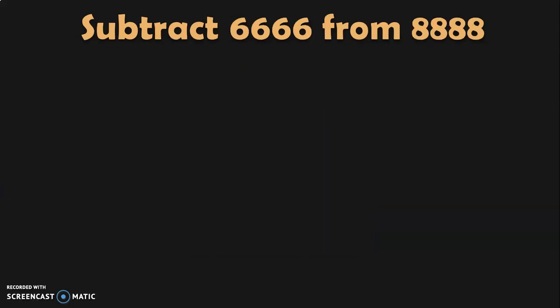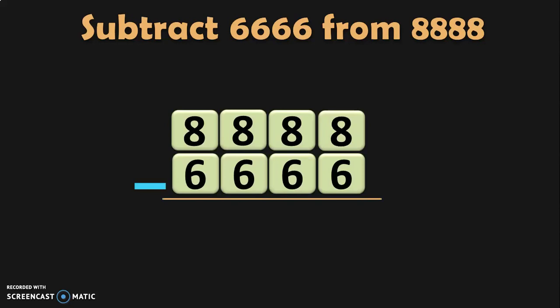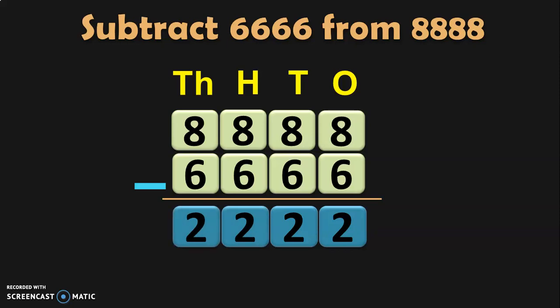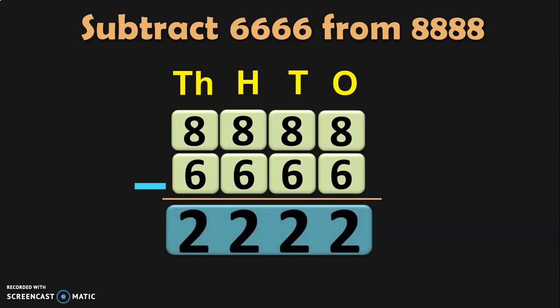Let us do this example: subtract 6,666 from 8,888. Write the bigger number on top and the smaller number below, and write down the place values. Ones: 8 minus 6 — before 8: 7, 6, 5, 4, 3, 2. Tens: 8 minus 6 is 2. Hundreds: 8 minus 6 is 2. Thousands: 8 minus 6 is 2. The difference between 8,888 and 6,666 is 2,222.